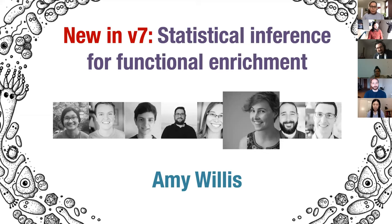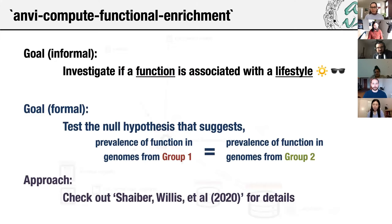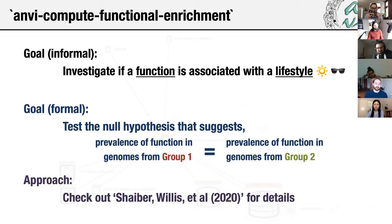Next we have Amy Willis. I'm an assistant professor at the University of Washington. My research group is called the Statistical Diversity Lab, and we develop statistical methods for the analysis of microbiome and biodiversity data. My main contribution for AMVIO V7 was to propose a new statistical inference framework for testing functional enrichment — the function called ANV-compute-functional-enrichment. Informally, we're interested in assessing whether or not a function is associated with a particular lifestyle, such as niche breadth, a location, or a particular type of environment.